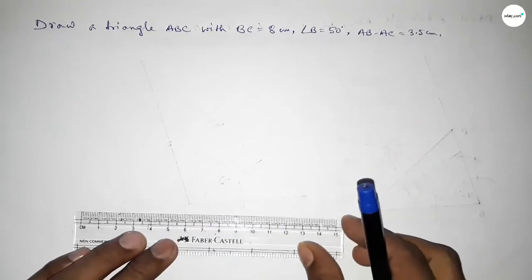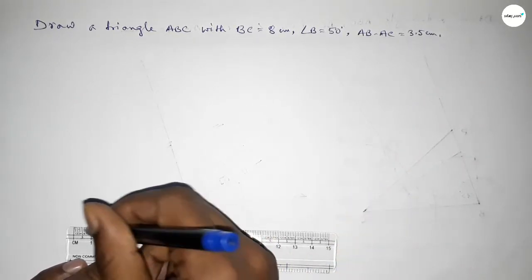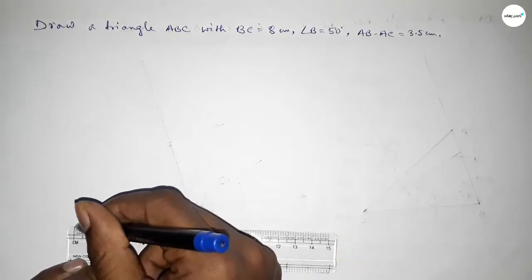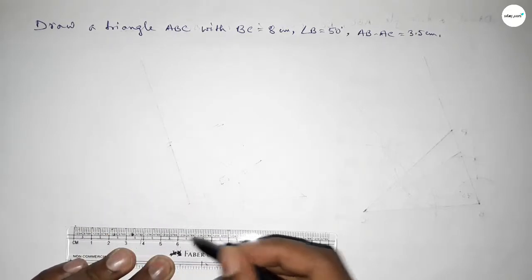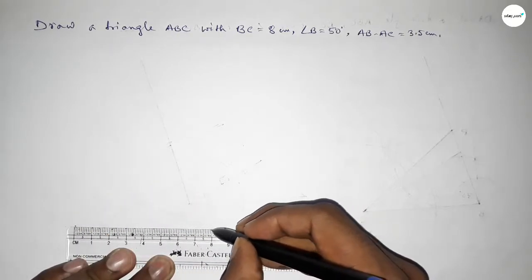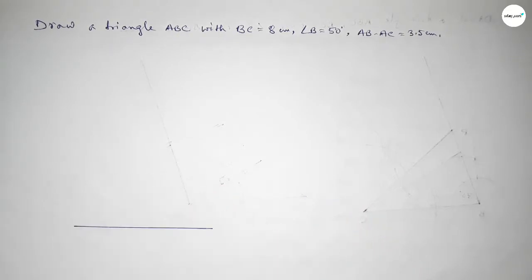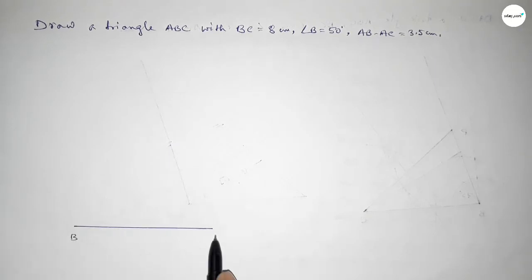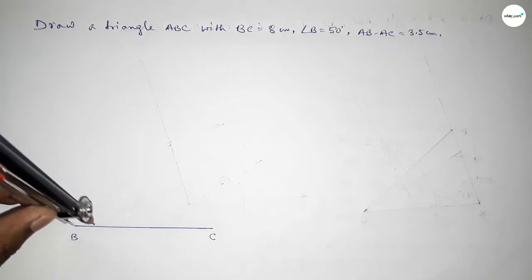First of all, we have to draw a line of length 8 centimeters. This is 8 centimeters, taking point B here and point C here. Now we have to draw a 50 degree angle at point B.